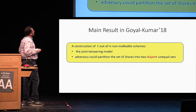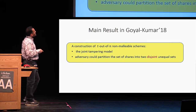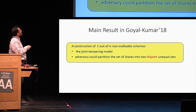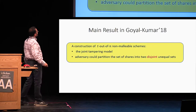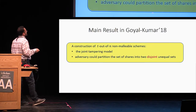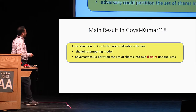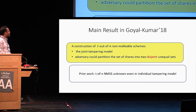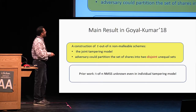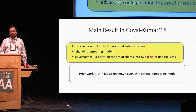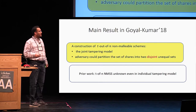The main result in prior work was a construction of a T-out-of-N non-malleable secret sharing scheme in the joint tampering model, where the adversary could partition the shares into any two disjoint subsets. Prior to this work, T-out-of-N non-malleable secret sharing schemes were unknown even in the individual tampering model — the only thing known was two-out-of-two non-malleable secret sharing.